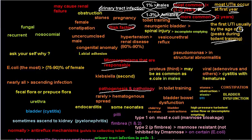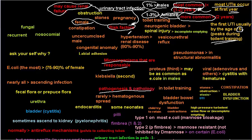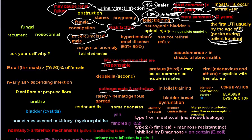The most dangerous thing about urinary tract infection is that it may cause sepsis and renal failure. Now let's move to the risk factors. Female gender by itself is a predisposing factor. Uncircumcised males are also at risk because smegma — a collection of bacteria under the prepuce — accumulates, making UTI more common in uncircumcised males.